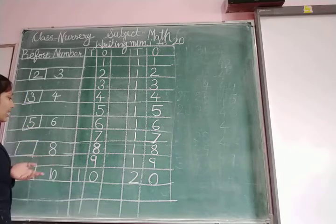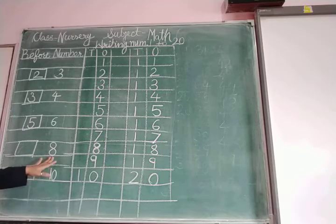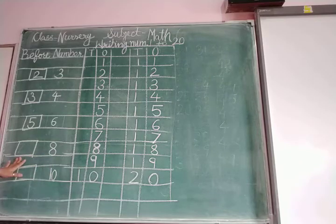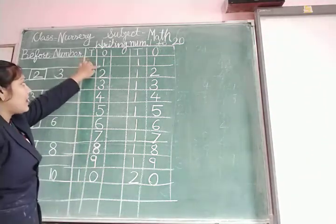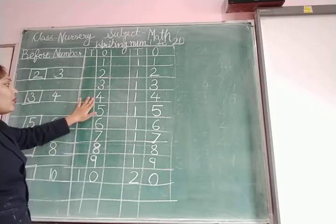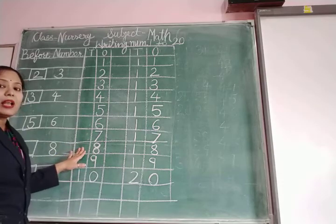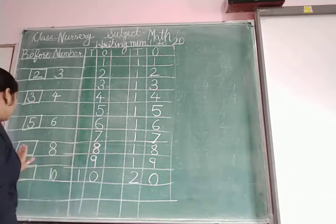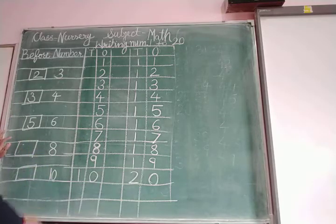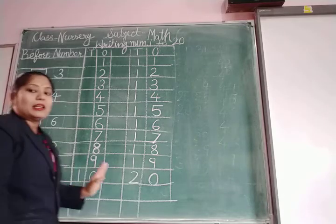Now our next number is number 8. This is number 8. Which number is before number 8? 8 ka before number kaun sa hai? Again, read these numbers: 1, 2, 3, 4, 5, 6, 7, 8. 8 ke pehle kaun sa number hai? Number 7. 7 is the before number of 8. 7, 8 ka before number hai.